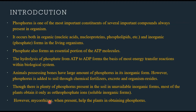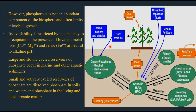Mycorrhizae are very useful in the conversion of insoluble phosphate into soluble form, so plants with mycorrhizal associations can easily obtain phosphorus. Phosphorus is one of the abundant components of the biosphere and often limits microbial growth. Both plants and microorganisms compete for phosphorus present in the soil.